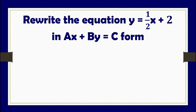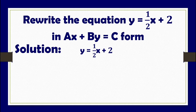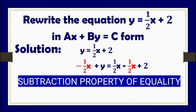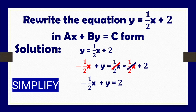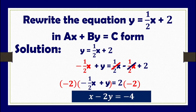Another example: rewrite y equals one-half x plus 2 in the form ax plus by equals c. We subtract both sides by one-half x to transpose it to the left side using the subtraction property of equality. The simplified form is negative one-half x plus y equals 2. Since the coefficient of x is negative one-half, we multiply both sides by negative 2 to make a a positive integer. The final answer is x minus 2y equals negative 4, which is the general form of the equation.